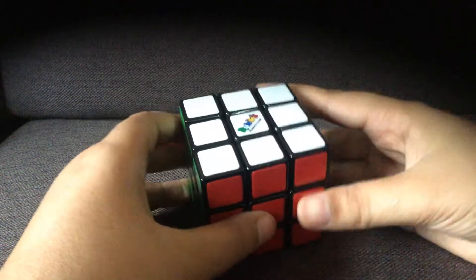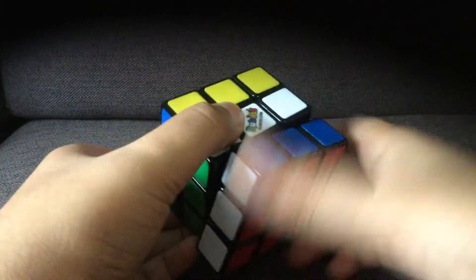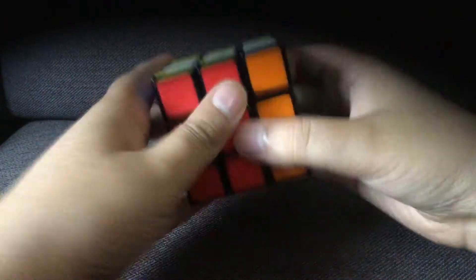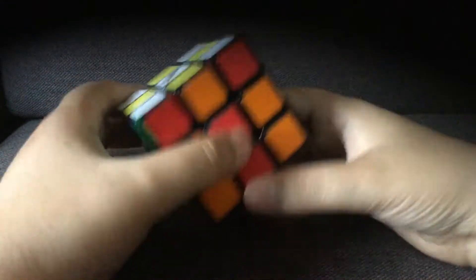First, what you do is you do two here and turn this two this way. Then you push these down, two, and then what you do is you do two like this.